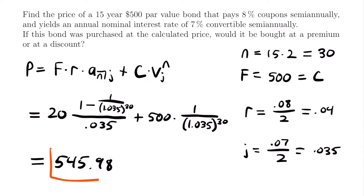So $545.98 is the price of our bond. However, we're not quite done — our problem asks whether this bond was bought at a premium or at a discount. To figure this out, look at your price: if it is greater than the face value of $500, you have a premium; if it is less, you have a discount. In this case, our price of $545.98 is greater than the face value of $500, so this bond would be bought at a premium.